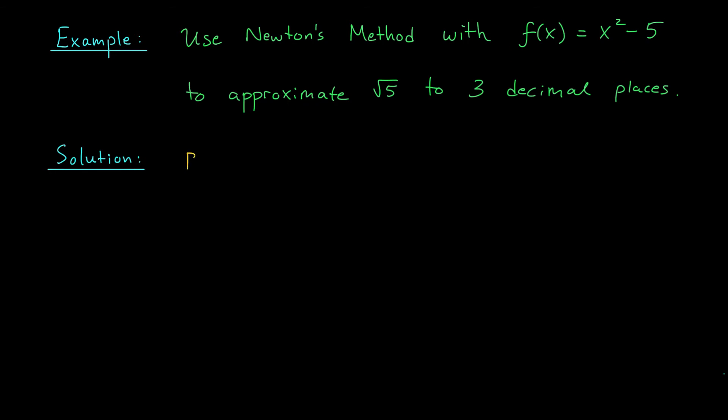And the roots of f of x, the roots of this function f of x equals 0, are plus or minus root 5. So this checks out. Newton's method really will be approximating root 5 or its negative.